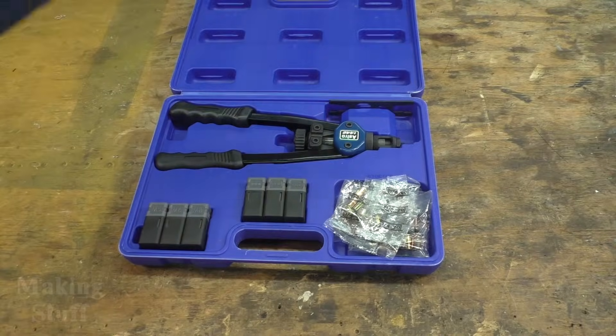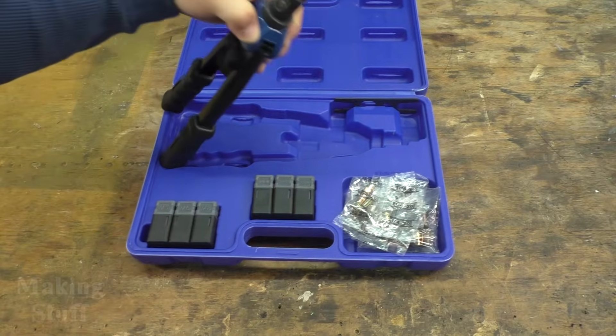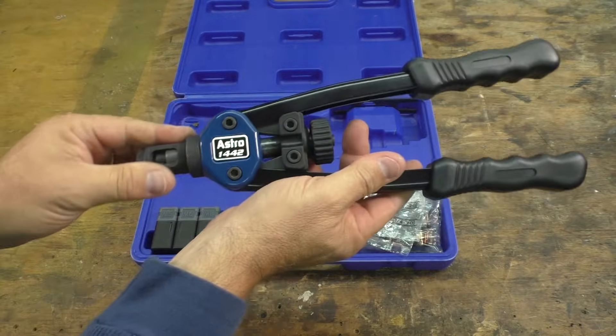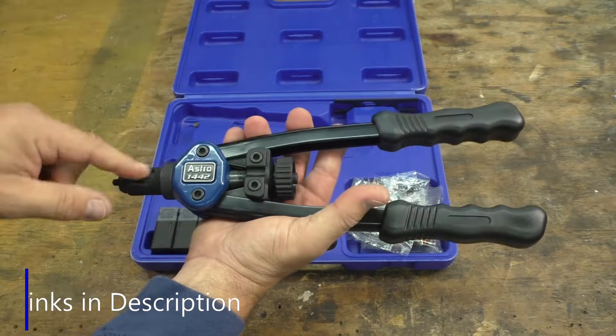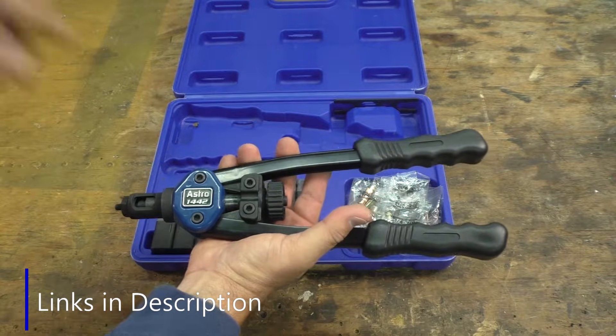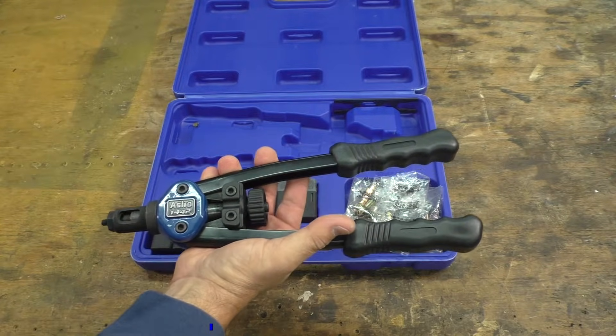And I have a rivet nut tool right here. This one is an Astro 1442 and I've got links to this in the description of the video if you're interested in picking one of these up for yourself.